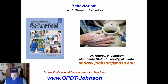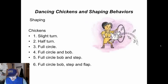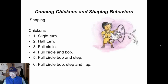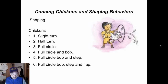Part 7 on Behaviorism — we are looking at shaping behaviors. Shaping involves small steps towards a desired behavior initially, followed by rewards coming only after the behaviors become closer and closer to the desired behavior. Let me explain.